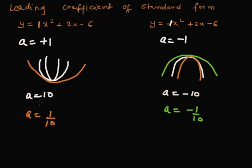More is the magnitude of A, narrower is the graph. Less is the magnitude of A, whether it is positive or negative, the absolute value of A. If more is the absolute value of A, narrower is the graph. Less is the absolute value of A, broader is the graph.